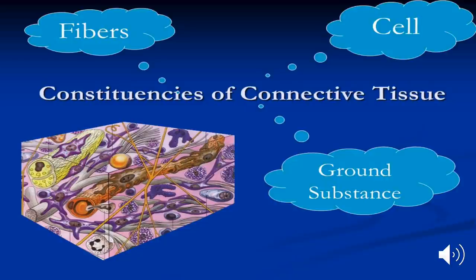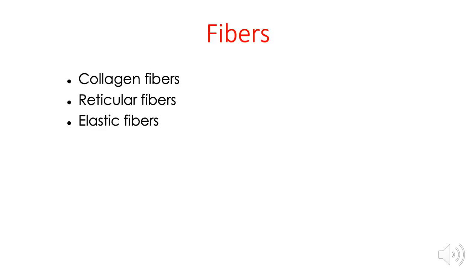We're done with the first two components of connective tissue — cells and ground substance. It's now time to discuss the third component: the fiber. There are three basic types of fibers. We have collagen, reticular, and elastic fiber. If the organ must be tough and strong, the best fiber is collagen. If the organ is soft and contains a lot of cells, the best fiber to support them is reticular. If the organ is always subjected to bending and stretching and must return to its original size, the best fiber is elastic.